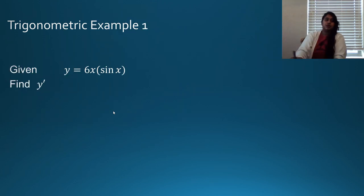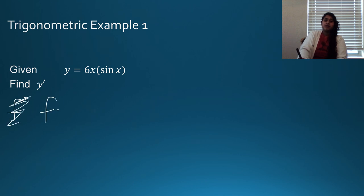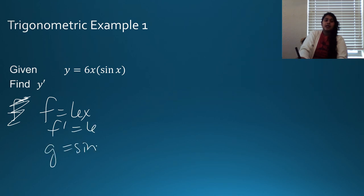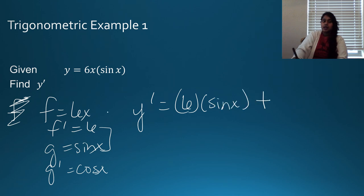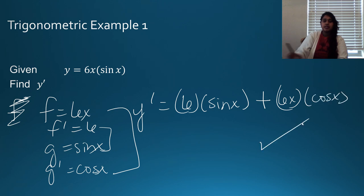First trig example: f equals 6x, f prime equals 6. g equals sine x, derivative is cosine x. So I pair my inside and add the outside.